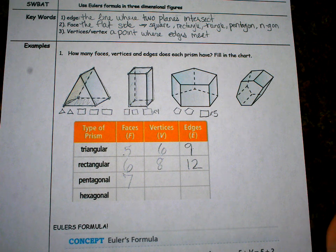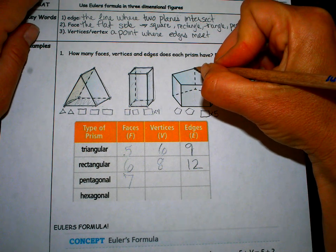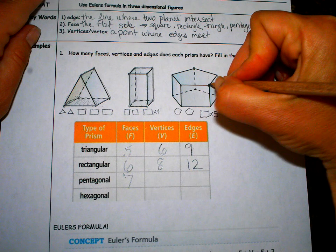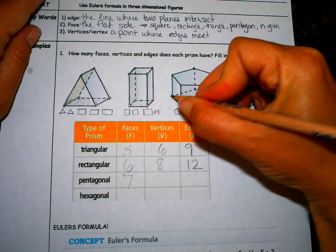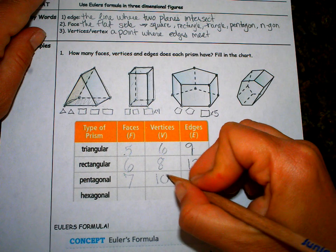Let's do vertices. Vertex, like little points. One, two, three, four, five, six, seven, eight, nine, 10. 10 vertices.